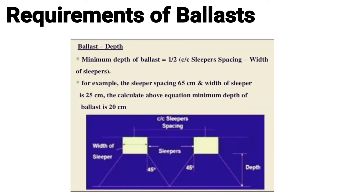The minimum depth of ballast is half of the center-to-center distance of sleeper spacing minus the width of the sleeper. For example, if sleeper spacing is 65 cm and width of sleeper is 25 cm, the minimum depth of ballast would be 20 cm.